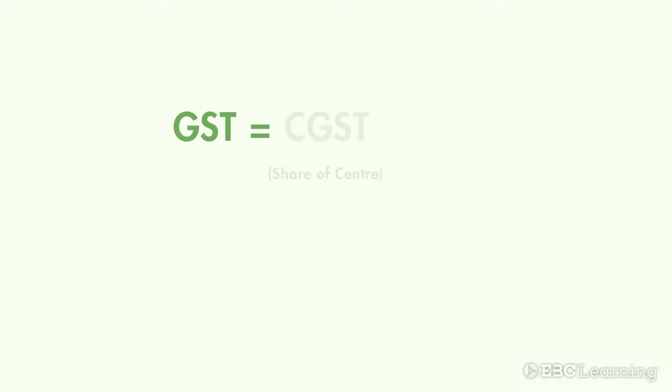GST is levied simultaneously by the central and state governments for a transaction within a state. For example, if a manufacturer of shirts in Mumbai sells them to a dealer in Nagpur, then he has to pay GST. The tax paid by him has two shares — one half for the center and the other half for the state. The share of the center is known as CGST and the share of the state is known as SGST.